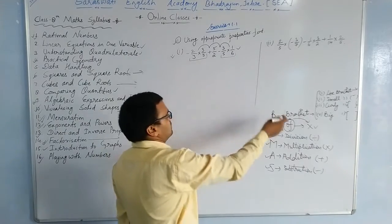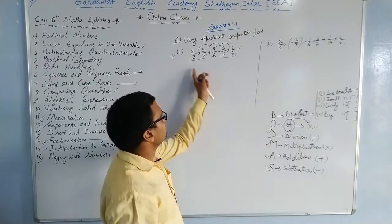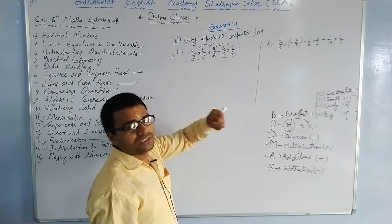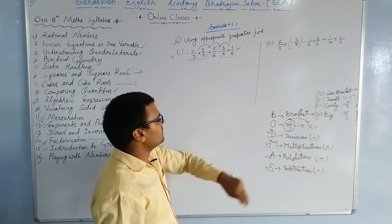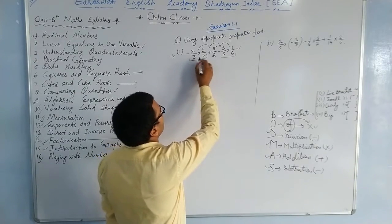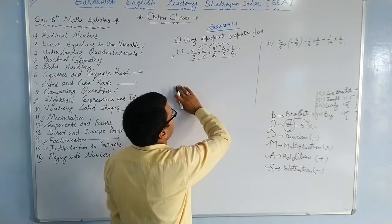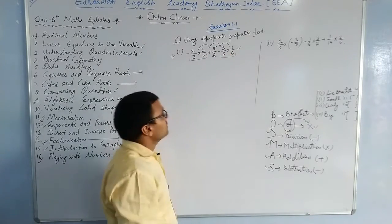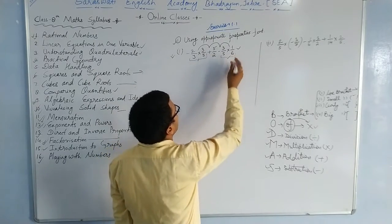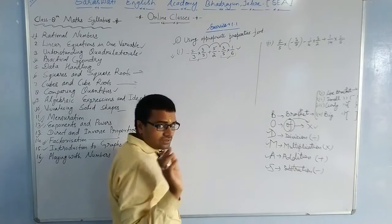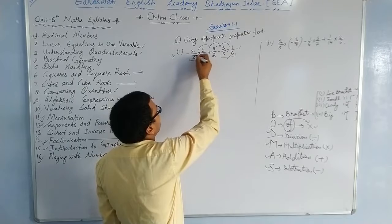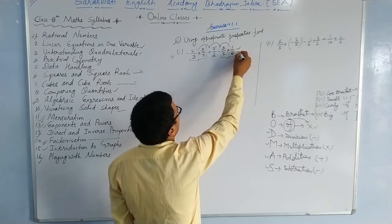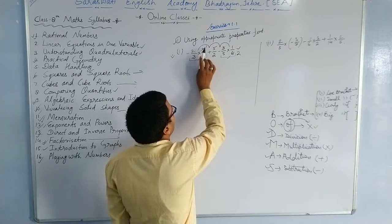In this sum there are no brackets, so we skip B. There is no 'of', so we skip O. There is no division symbol either, so we skip D. Next is M — multiplication. We can see a multiplication symbol between two pairs of fractions. We will operate both multiplication symbols. Here 3 is cancelled by 3 once, and 6 is cancelled by 3 twice.